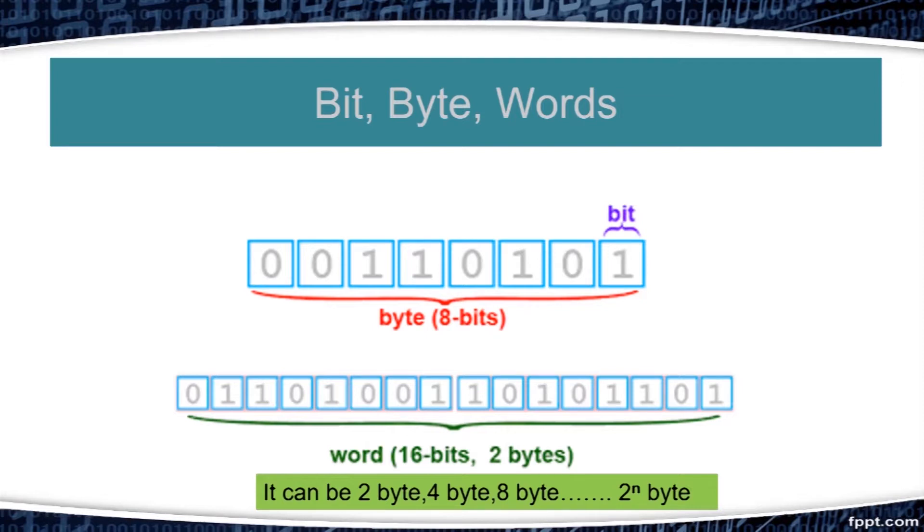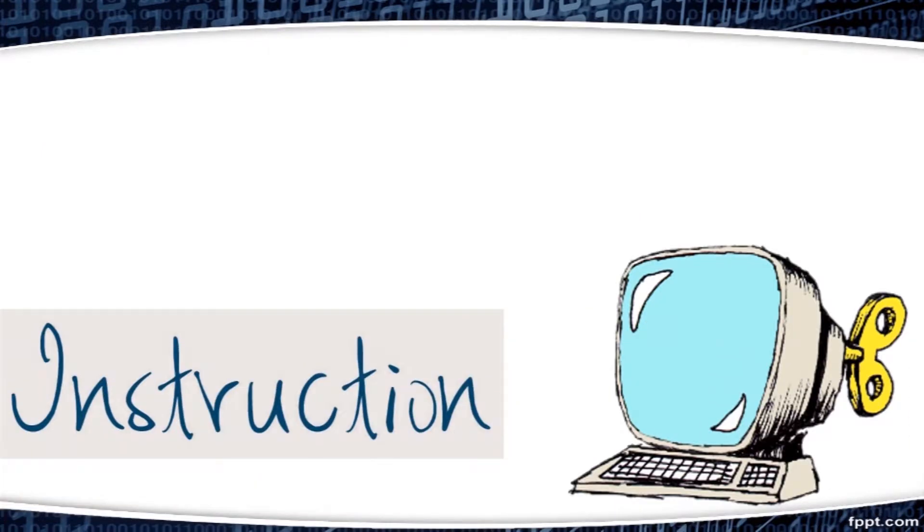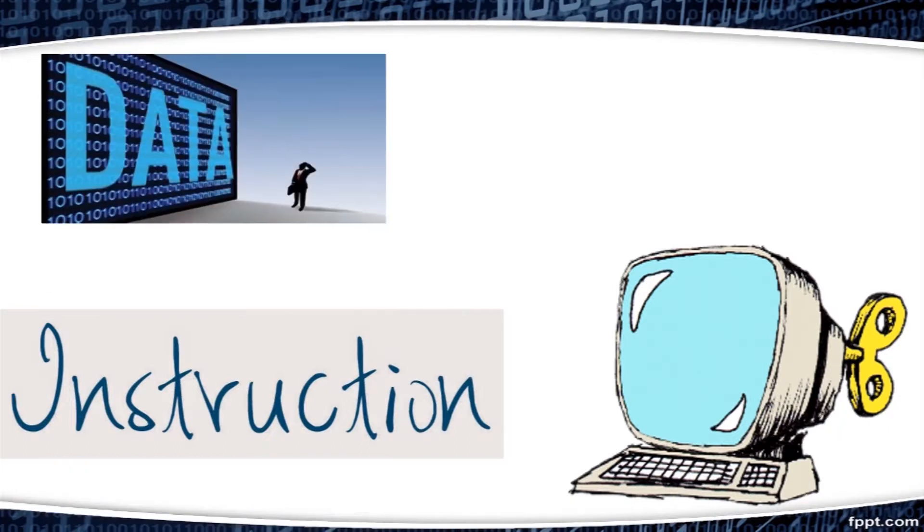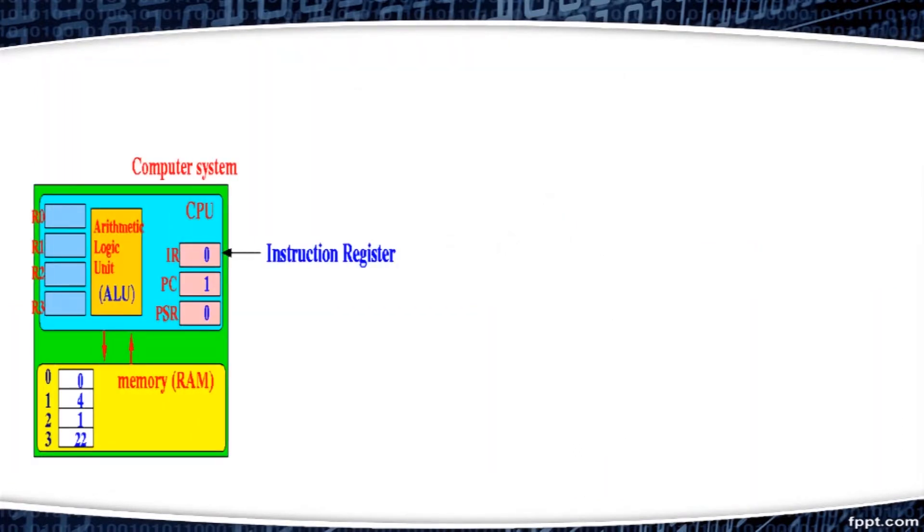As we know, computer works as we give instructions to it. The instructions and the data needed by a program are stored in memory. The processor reads the next instruction to be executed from memory. It is placed in an instruction register, IR.